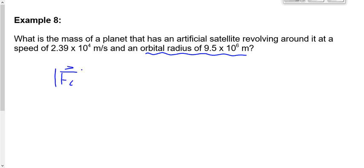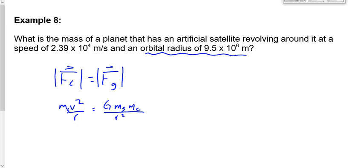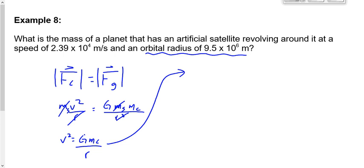It's a satellite, so FC = FG: mv²/r = G·ms·mc/r². The satellite mass cancels, one r cancels, leaving V² = G·mc/R. This time we're solving for mass, so multiply both sides by r: V²·r = G·mc. Then divide by G: mc = V²·r / G.